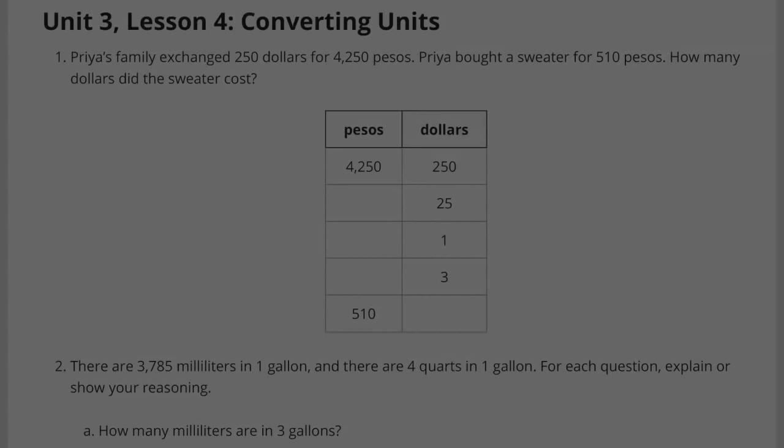Unit 3 Lesson 4: Converting Units. Problem 1: Priya's family exchanged $250 for 4,250 pesos. Priya bought a sweater for 510 pesos. How many dollars did the sweater cost?